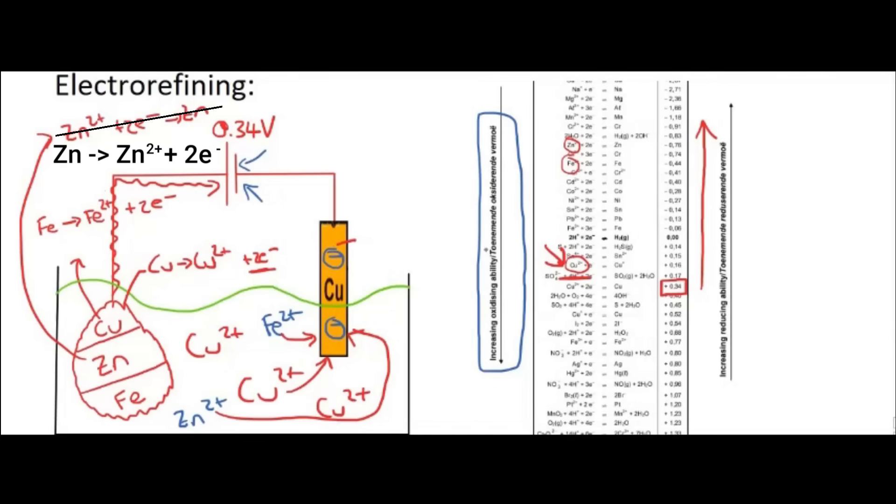And so the reaction that's going to take place over there. Sorry, I circled the wrong one. I meant to circle this one. But nonetheless, it's still going to win. And so we know that over here, copper 2 plus plus 2 electrons is going to give us copper.